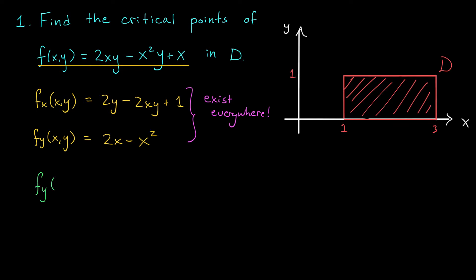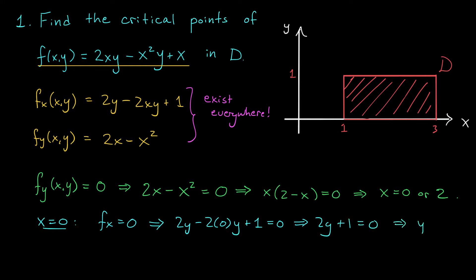We'll start with the simpler equation, which in this case is fy. If fy is equal to 0, it means that 2x - x² is equal to 0. We can factor an x here. We get x times (2 - x) is equal to 0, which means that x is either 0 or 2. We have two cases to consider. First, what happens to this equation, f sub x is equal to 0, when we set x equal to 0? Well, that equation becomes 2y - 2(0)y + 1 = 0, or equivalently, 2y + 1 = 0. Solving this, we get y is -1/2. And therefore, we have a critical point (0, -1/2).